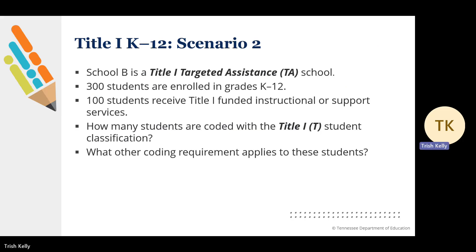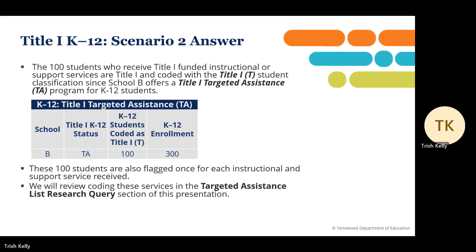Title I K-12 Scenario 2. School B is a Title I targeted assistance school. 300 students are enrolled in grades K-12; 100 students receive Title I funded instructional or support services. How many students are coded with a Title I-T student classification? The 100 students who receive Title I funded instructional or support services are Title I and coded with a Title I-T student classification because School B offers a Title I targeted assistance program for K-12 students. These 100 students are also flagged once for each instructional and support service funded by Title I.